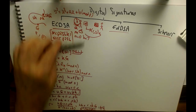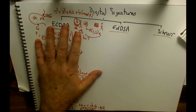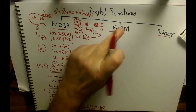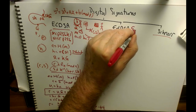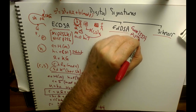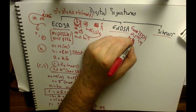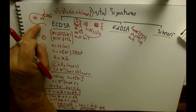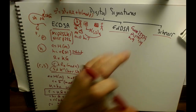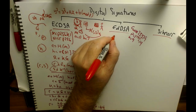ECDSA is used extensively in Bitcoin and transaction signing, but it has weaknesses. These are overcome using EdDSA, which uses an Edwards twisted curve — typically Curve 25519 — with a prime of 2²⁵⁵ − 19. The base point for the x value equals 9, and in Curve 25519 we only work with x-coordinates in our calculations.